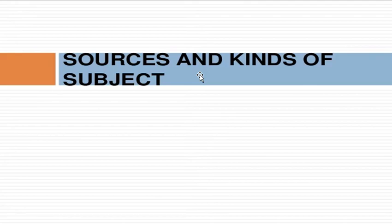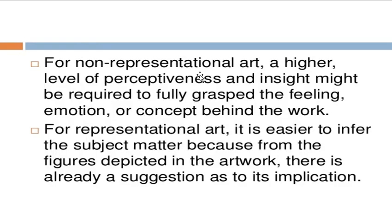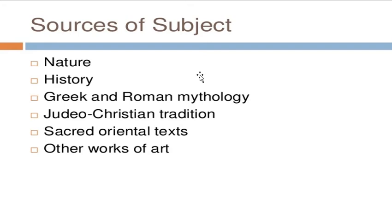We are going to discuss what are the sources — where artworks come from, where inspiration comes from — and the kinds of subjects that the artist tries to depict in their art pieces. The different sources of subjects are: nature, history, Greek and Roman mythology, Judeo-Christian tradition, sacred oriental texts, or other works of art.